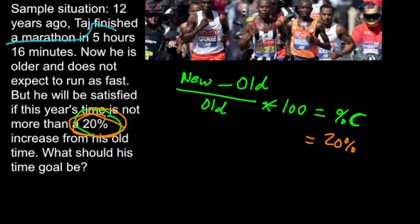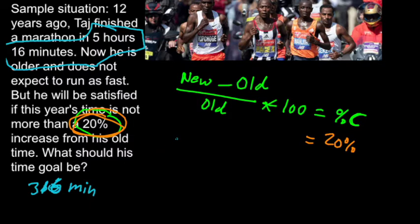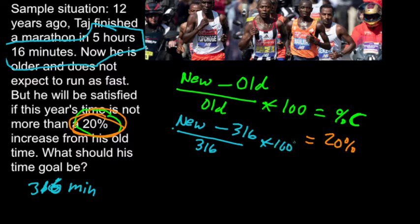My old value is 5 hours, 16 minutes. I don't like dealing with mixed units, so I'll translate that all to minutes. There are 60 minutes in one hour, so 300 minutes in five hours — meaning 316 minutes equals 5 hours 16 minutes. Setting up the formula: new time minus 316, divided by 316, times 100 is less than or equal to 20.